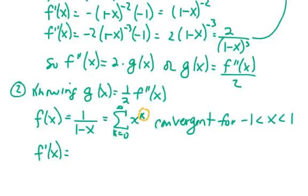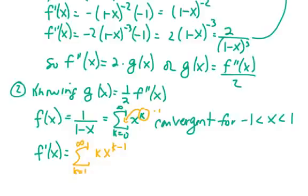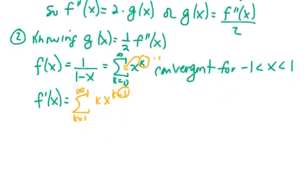Let's take the first derivative by manipulating the indices. When you take a derivative, k becomes a constant multiplier and you subtract 1 from the exponent. So the first derivative is the sum starting at k equals 1 of k times x to the k minus 1. Since I subtracted 1 from the exponent, I start the index at 1.